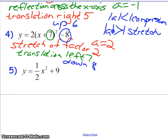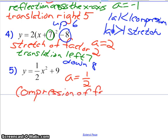And then problem number five. A equals one-half. It is not negative, so it's not a reflection. The absolute value of A, one-half, is less than one. That's what makes it a compression. So this is a compression of factor one-half.